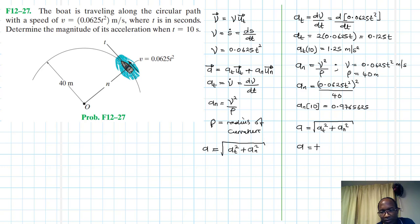Then I'll round off the final answer, which is 1.59 meters per second squared. So 0.9765625 squared plus 1.25 squared, then square root of the final answer, 1.59. So this is the final solution, which is the magnitude of our acceleration.